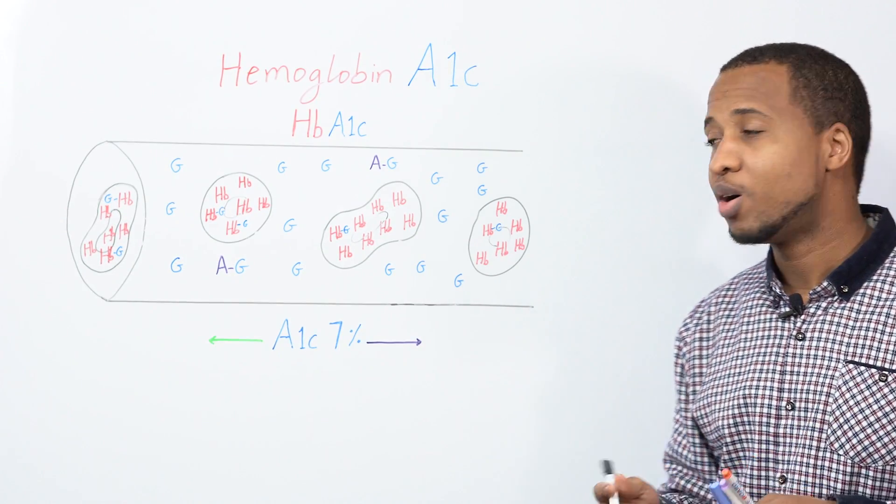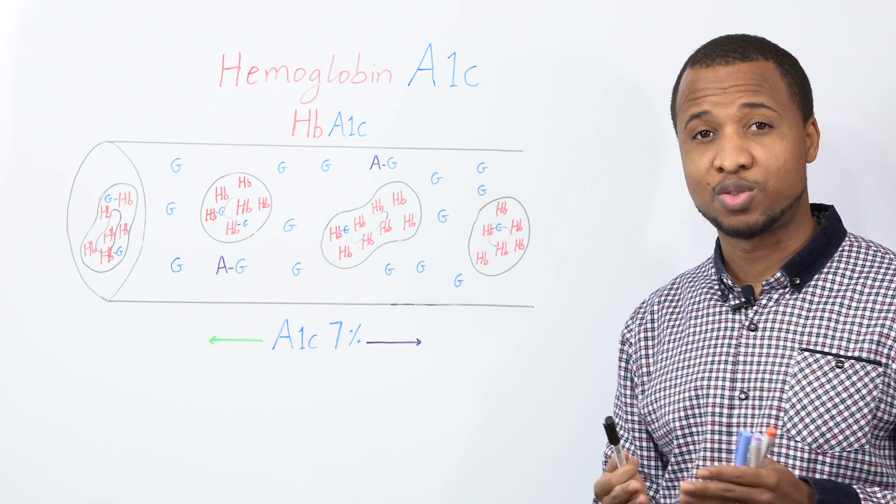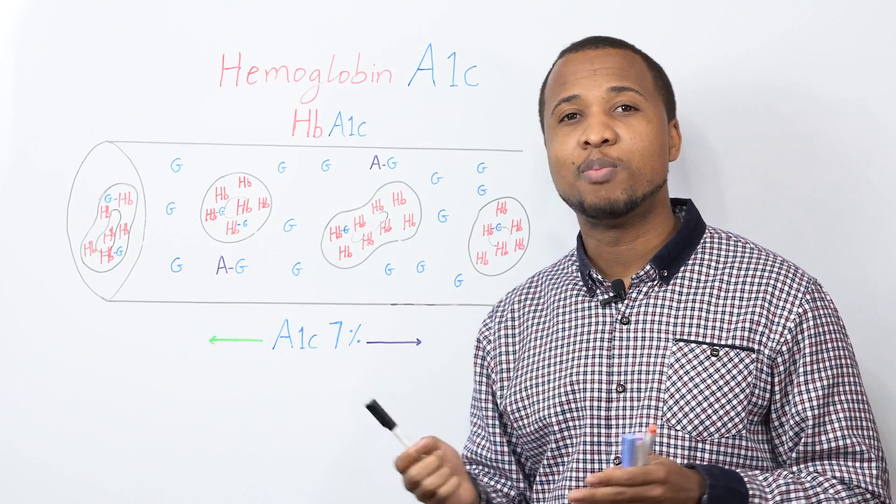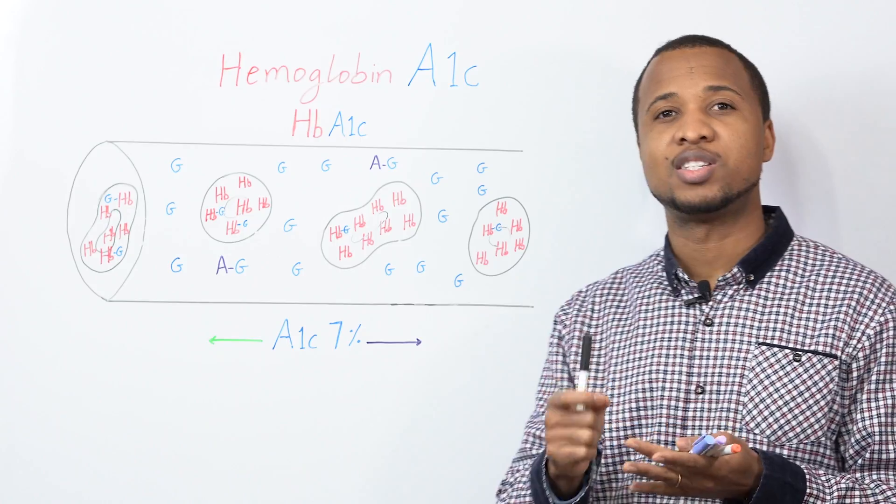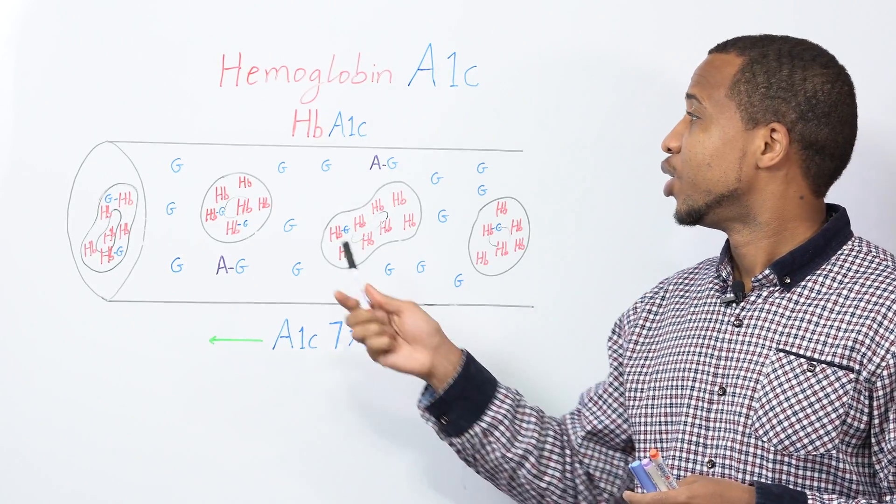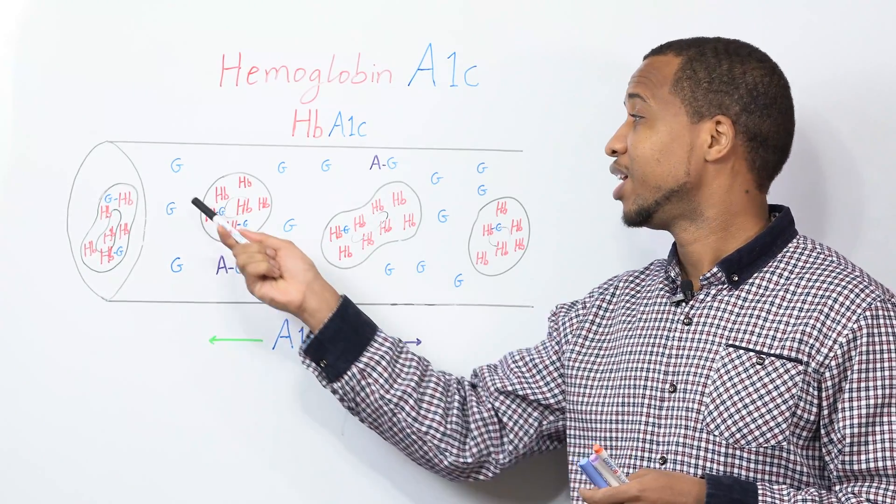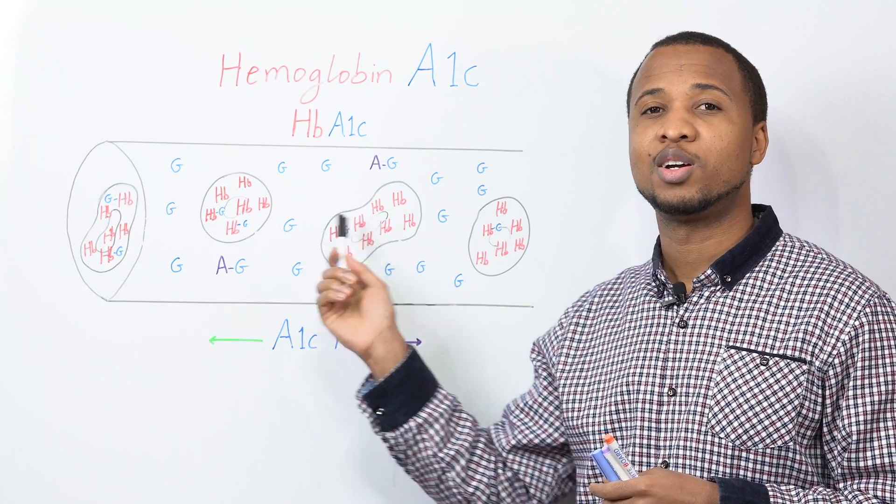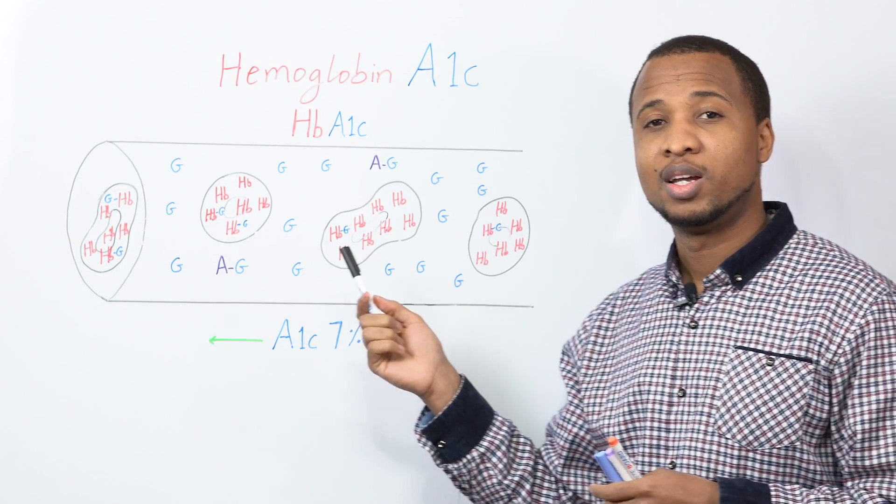Now, what we already know is that we have glucose in our bloodstream. And when you measure your blood sugar, when you do this and check your blood sugar, you are checking the sugar in your blood that is freely moving up and down.